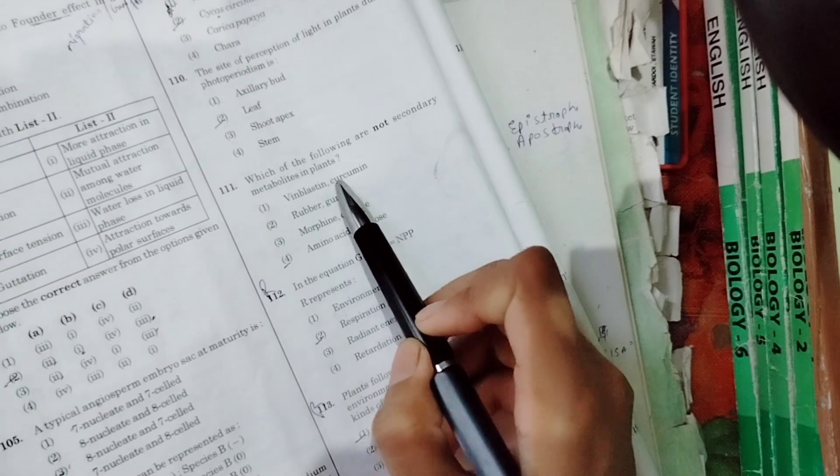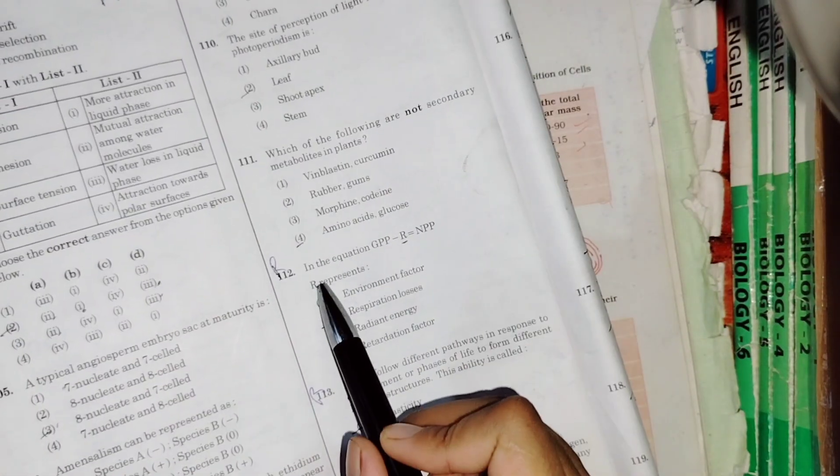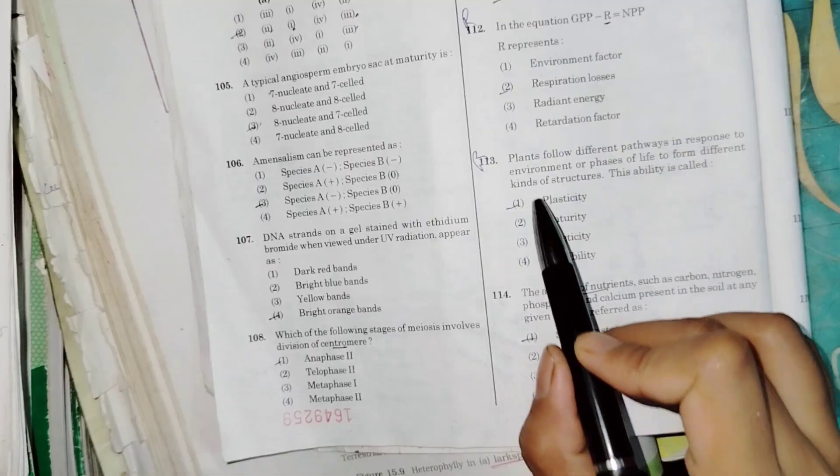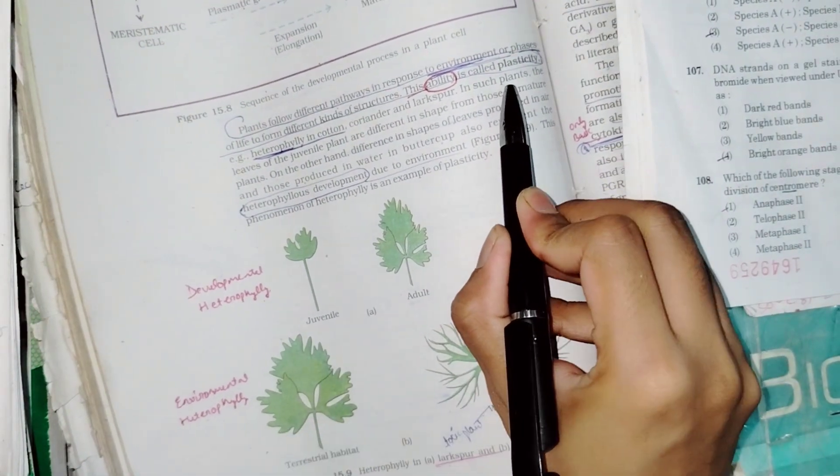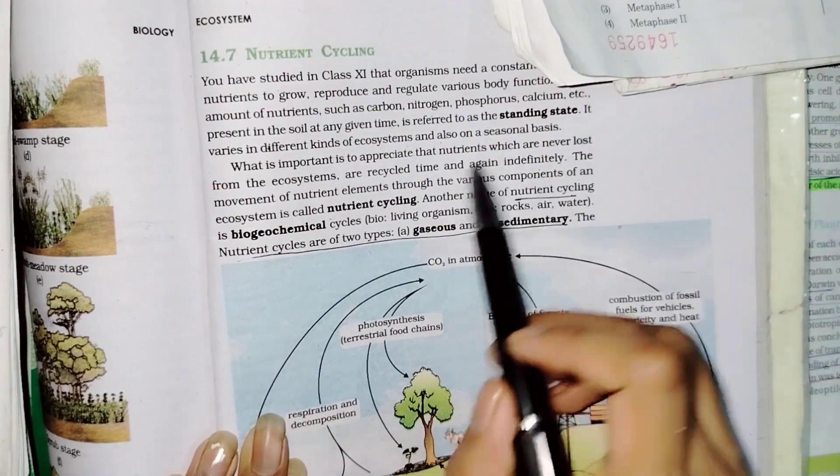Which of the following are not secondary metabolites in plant - secondary metabolites. In the equation GPP minus R represent respiration loss. Different pathways in response to environment is called plasticity. Amount of nutrients such as carbon nitrogen at any given time is referred as standing state.